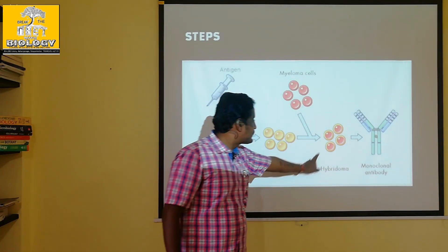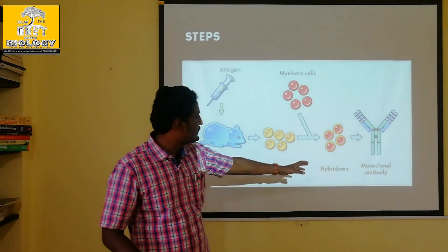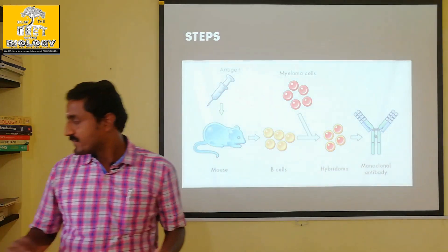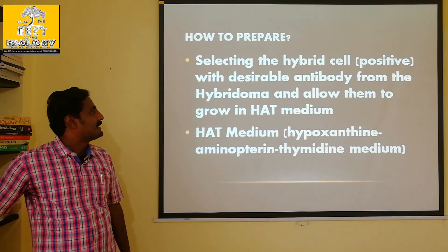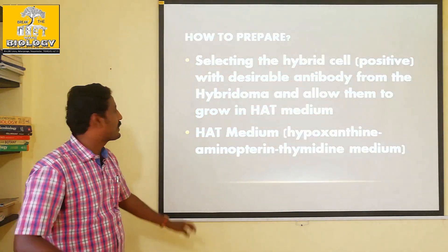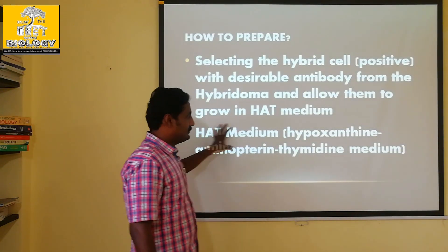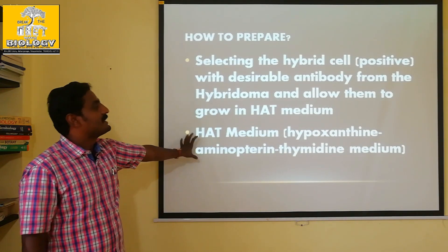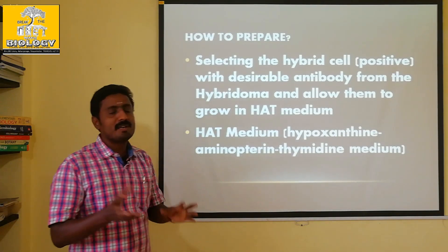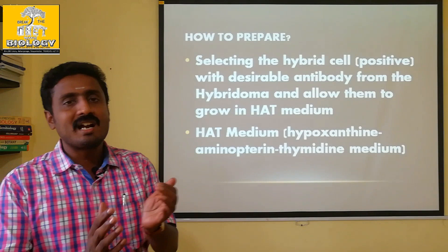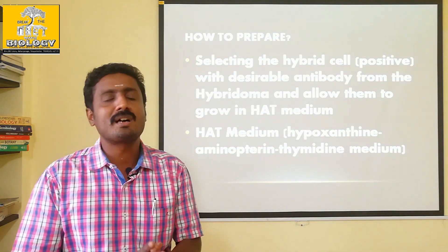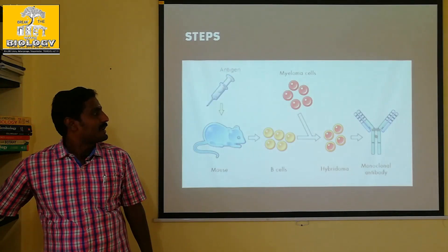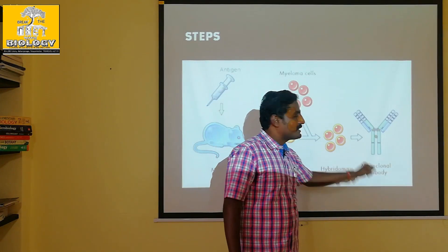The hybridoma cells are selected using HAT medium — Hypoxanthine, Aminopterin, and Thymidine medium. Cells that are not correctly hybridized are removed in HAT medium, and only the correct hybridoma cells survive and are selected to produce antibodies.